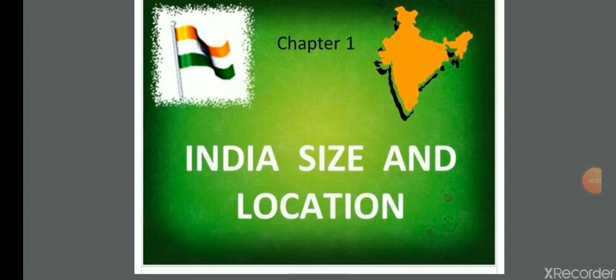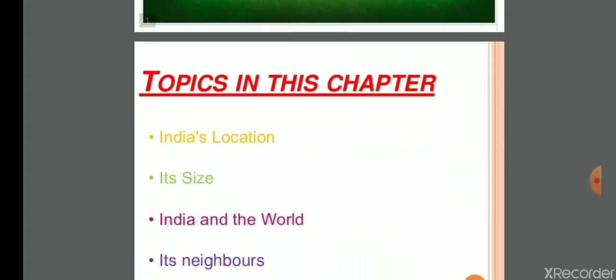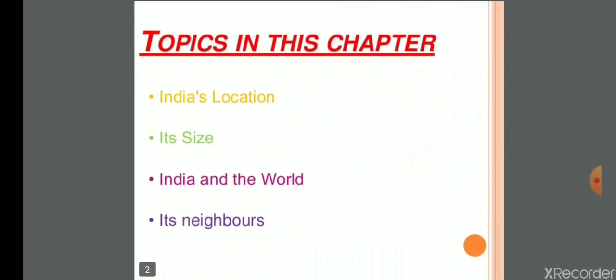Good morning students. Welcome to social science class. Today we will study the first chapter of geography class 9th: India — Size and Location. The main topics in this chapter are India's location, India's size, India and the world, and its neighbors.